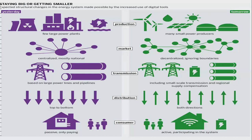Next, the conventional grid is based on large power lines and pipelines. But now the smart grid includes small-scale transmission and regional supply compensation. Next, the conventional grid uses top-to-bottom, one-way communication — power flows from generation to consumer. But in a smart grid, there is bidirectional workflow. Also, in the conventional grid you are only paying bills, but in a smart grid you are an active participant — you take power, feed power back, and also store power.